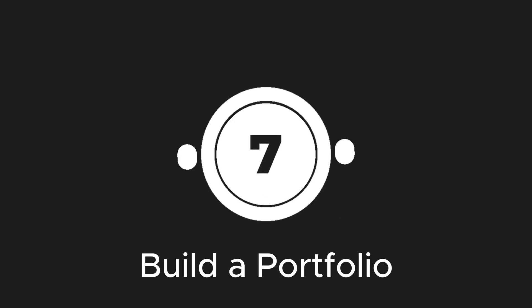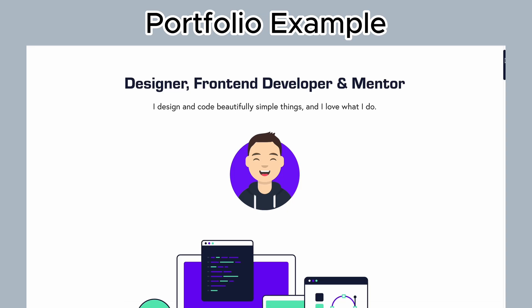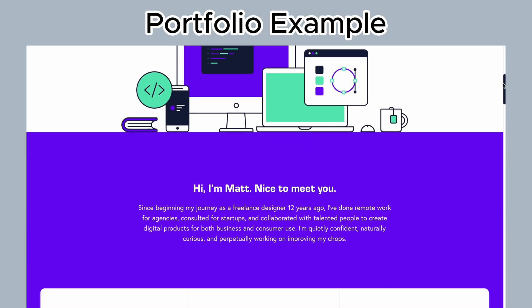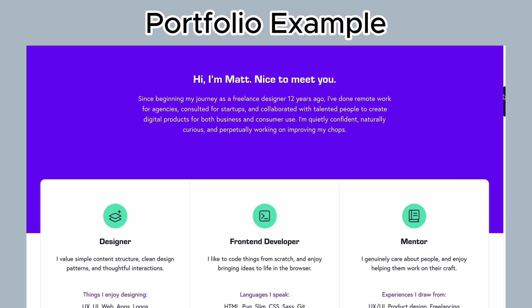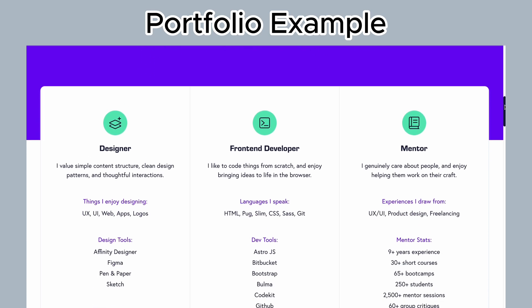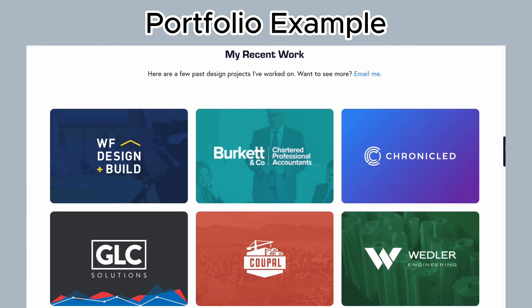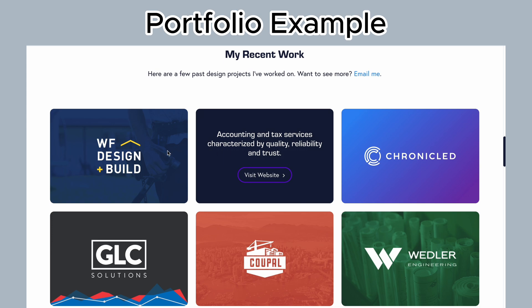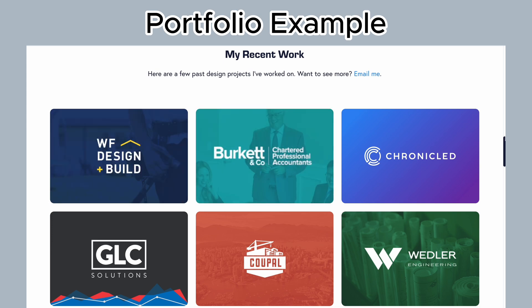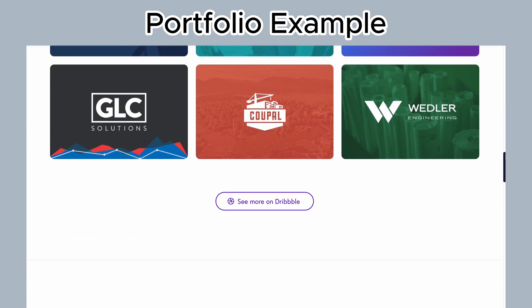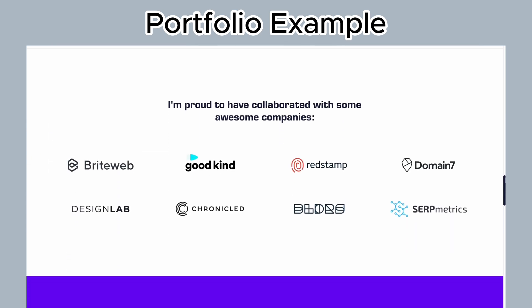Step 7: Build a portfolio. A portfolio showcases your skills and makes it easier for potential employers to see what you can do. This can be a personal website where you add all the projects you've worked on and the skills you know. It's similar to building a resume, but it's a website rather than a word document.